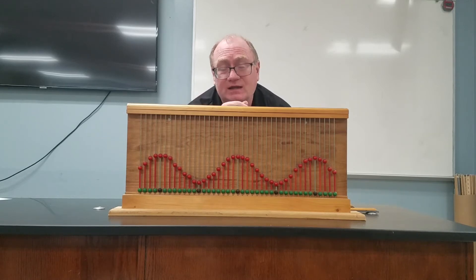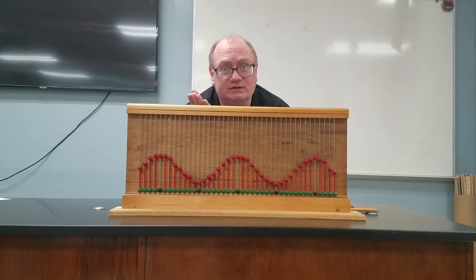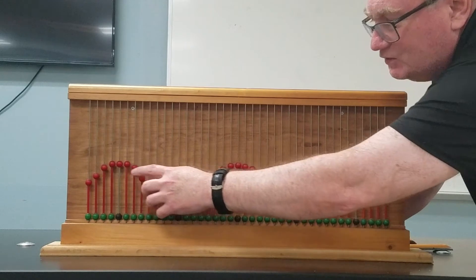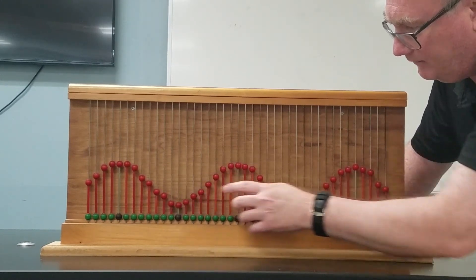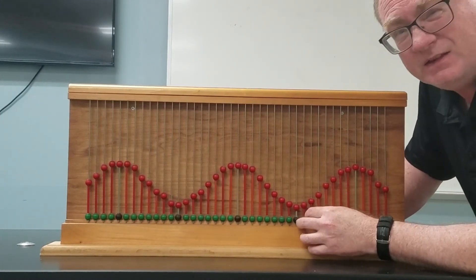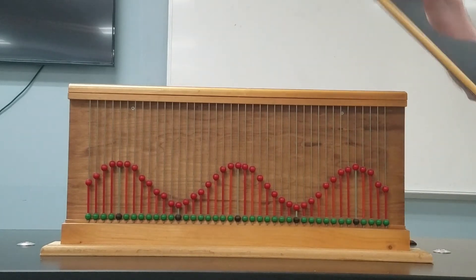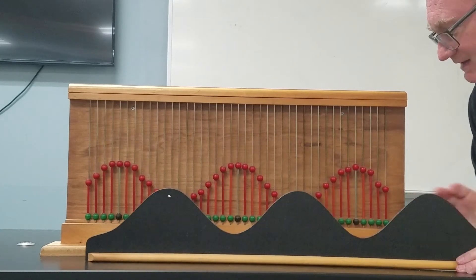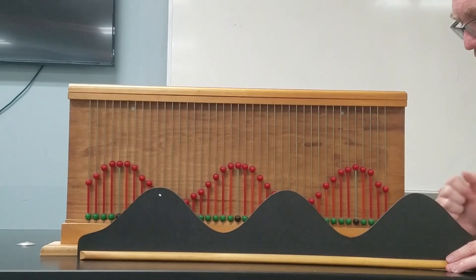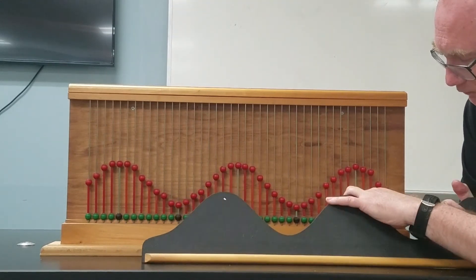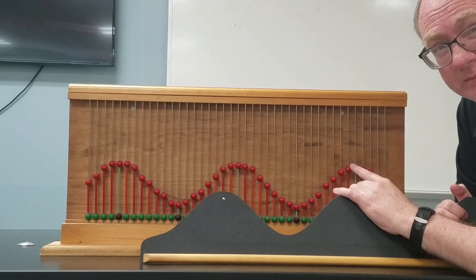Let's see what happens when we have two waves pass through each other. A lot of times we call this the superposition of waves. Right now we have a wave set up with a crest and a trough, and down below we've got another set of beads that we're going to use with this cutout. We'll slide this in and see what happens when a crest from the green beads matches up to a crest from the red beads.